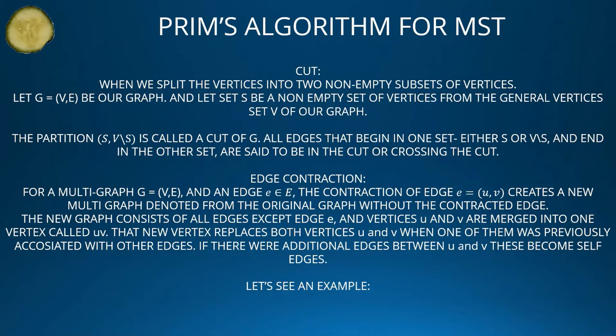Edge contraction. For a multigraph G = (V, E) and an edge E in E, the contraction of edge E = (U, V) creates a new multigraph from the original graph without the contracted edge. The new graph consists of all edges except edge E, and vertices U and V are merged into one vertex called UV. That new vertex replaces both vertices U and V when one of them was previously associated with other edges. If there were additional edges between U and V, these become self-edges.